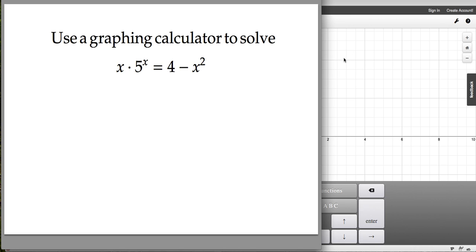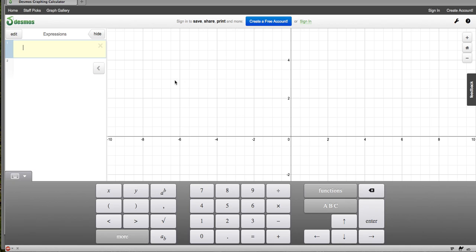And then I'm going to come over to my graphing calculator, and I'm going to type in y equals x times 5 to the x. Now to get the times, I typed the asterisk.